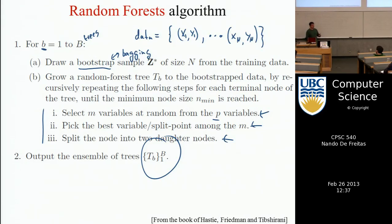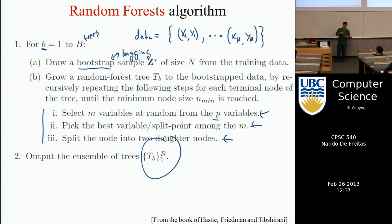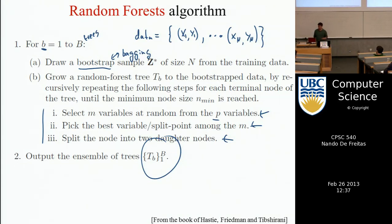To grow the tree, it's a recursive procedure. You start at the root and grow a binary tree by splitting the root node into two children, then recurse into those children. You always split a node into two until you meet some stopping criteria — too few data in the leaf, no good split point, or the tree has reached the max depth you've set beforehand.